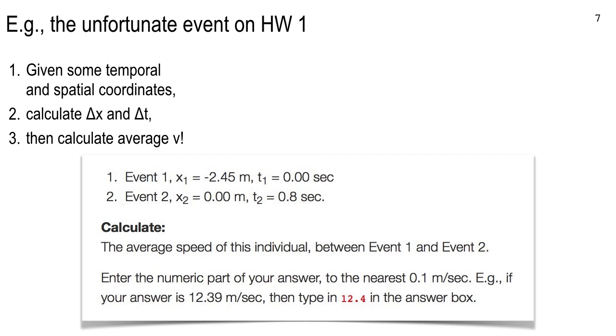Down here in the bottom half of this slide, this is an actual snapshot from the quiz or from the homework itself. There's the data, event one and event two, and the task to calculate the average speed. Below that is a little paragraph where I specify how to type in the answer. Let's look at this carefully. Event one and event two, there's an X and a T for each one. This is a calculation problem.